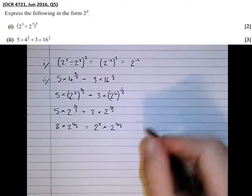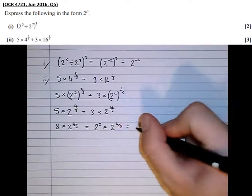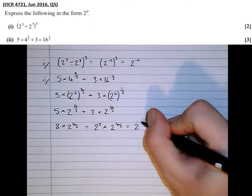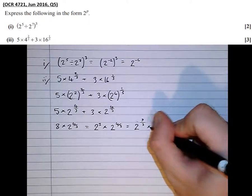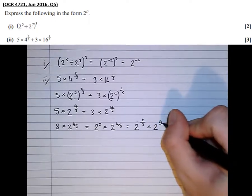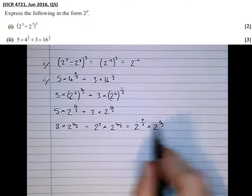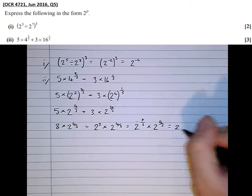Then adding these powers together, well best to have them both in thirds. 2 to the power of 9 thirds, 3 is 9 thirds, times 2 to the power of 4 thirds. Adding the powers, 9 thirds add 4 thirds is 2 to the power of 13 thirds.